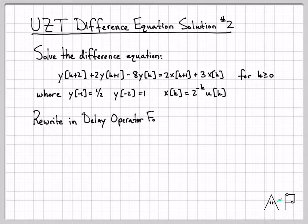So as my first step in solving this using the UZT, I'm going to rewrite the difference equation in terms of delays. We're going to write it in the delay operator form. So if I replace every k with k minus 2, I can transform the difference equation into this form. This is the way I like to work because I think of the UZT properties and time shifts in terms of delays like this.